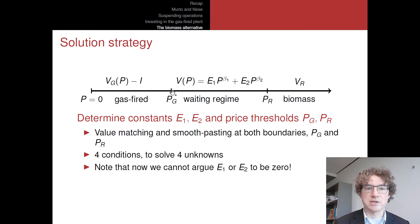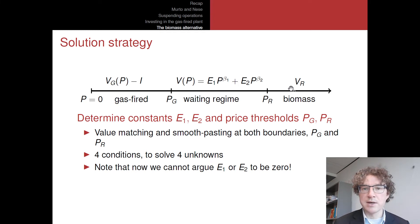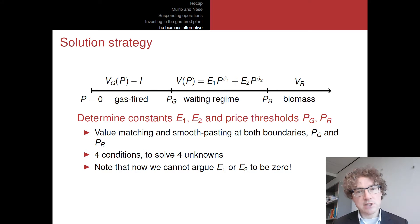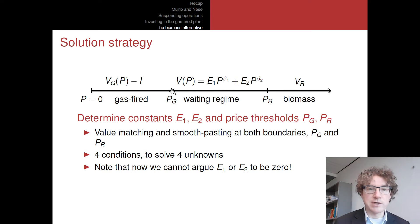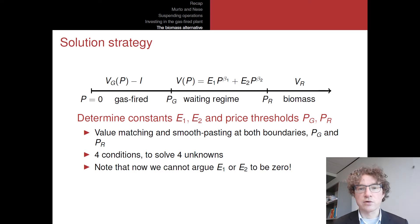Both on the lower side, where we make the investment at gas price threshold PG into the gas-fired plant, and at PR, where the gas price is high enough to make instead the investment in the biomass plant — on either of these boundaries we have to make sure that values are nicely matched, and that this function is smoothly and differentiably fitted to either the left-hand side or the right-hand side. That's two conditions at the lower boundary — value matching and smooth pasting — and two conditions at the upper boundary — value matching and smooth pasting — and four unknowns that we need to determine. So four conditions, four unknowns.